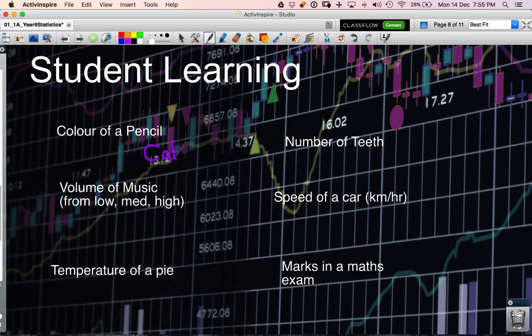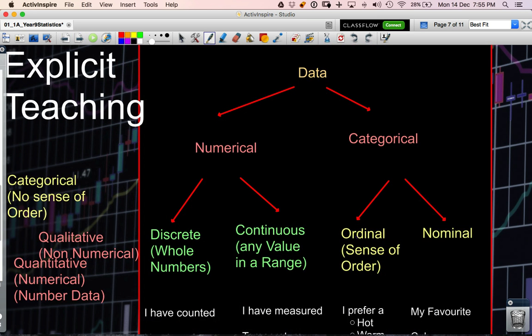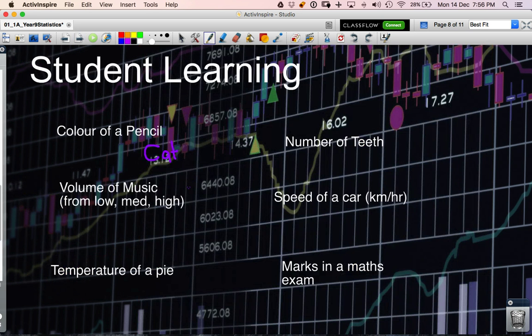Now the volume of music, it's certainly not associated with a number. And you'll notice here this ordering of low, medium and high. So this here would be ordinal because it has a sense of order.